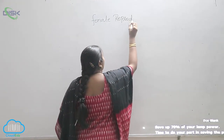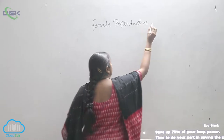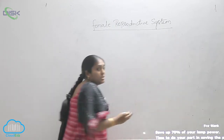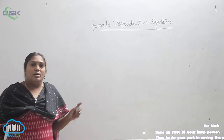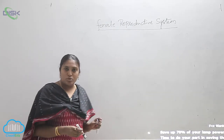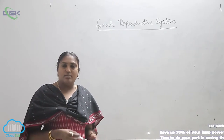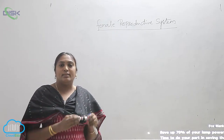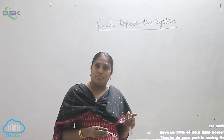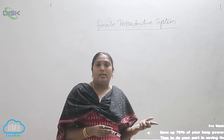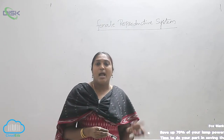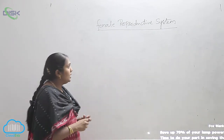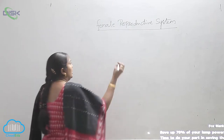Reproductive system — what is meant by the female reproductive system? The organs which are associated with reproduction, gametogenesis, and other processes involved in females, right from when they are in the womb of the mother till they attain menarche and menopause — all this cumulatively we call the female reproductive system.